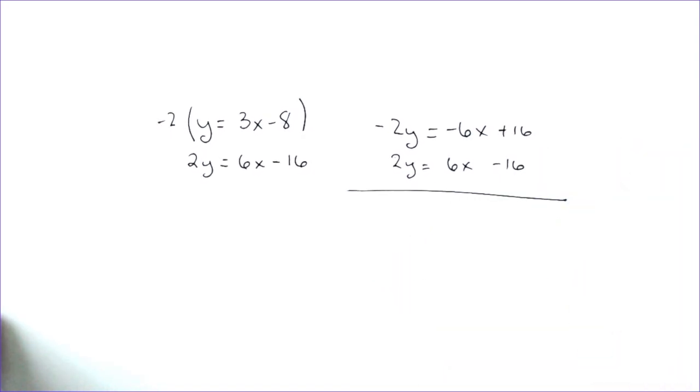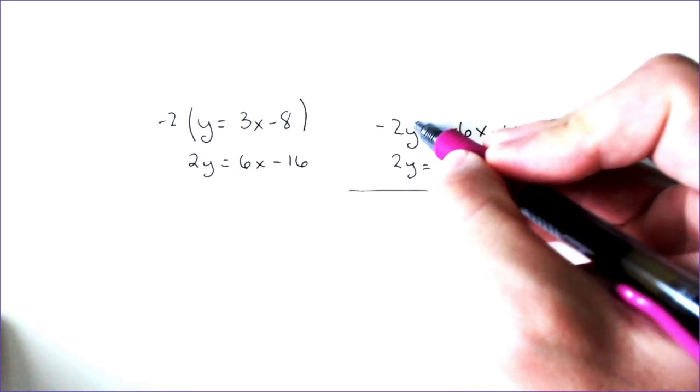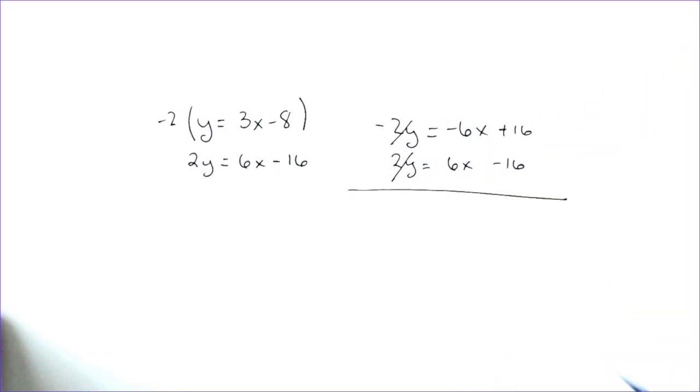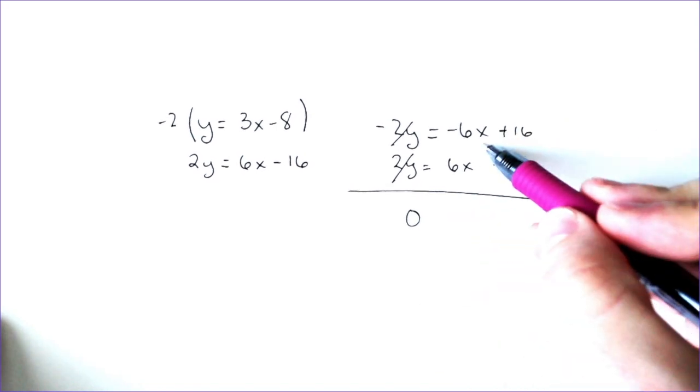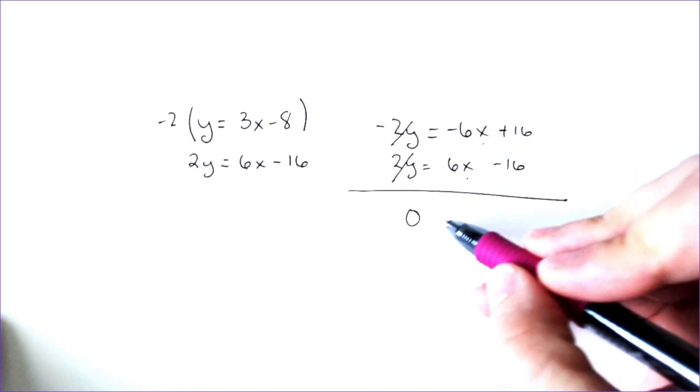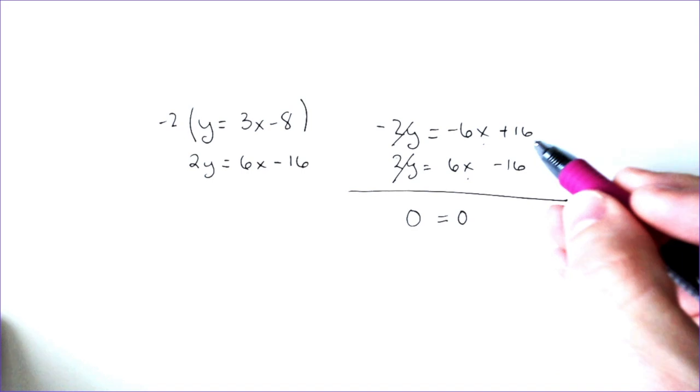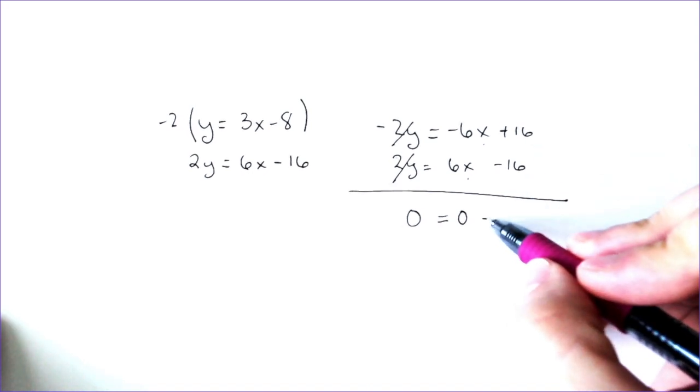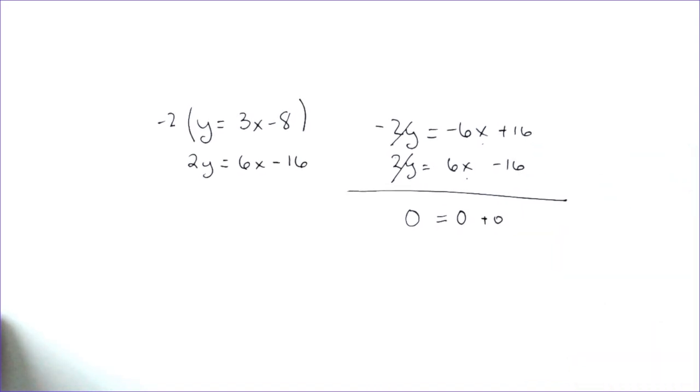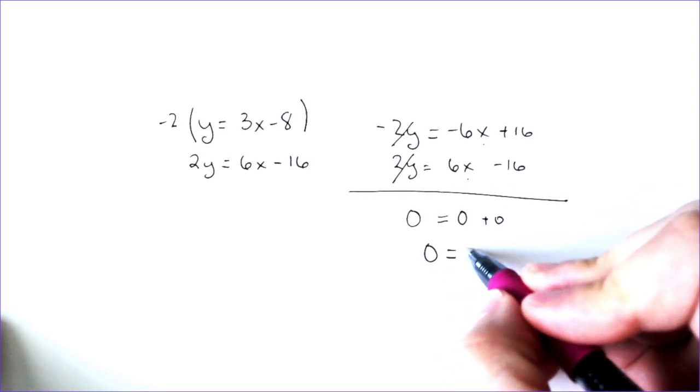Well, here we're going to have a unique situation because it's infinitely many solutions or no solutions. You're going to have situations that make the equations look really weird. In this case, 2y and -2y cancel, you get zero. -6x and positive 6x cancel, so you get zero there. And 16 minus 16 is also zero. So you can write all these zeros down. But really, you end up with zero equals zero.